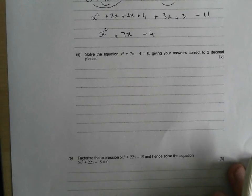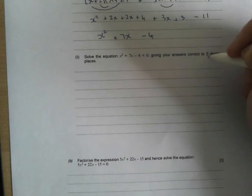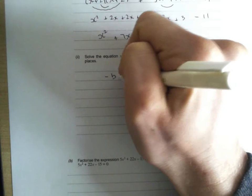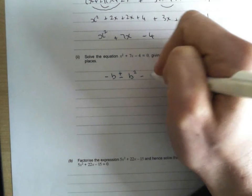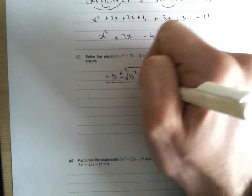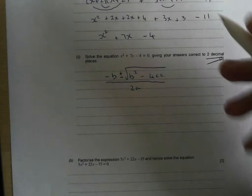Next one. Solve the equation x squared plus 7x minus 4 equals 0, giving your answer to two decimal places. As soon as you see that, that is a golden shining light that says it's got to be a formula job, a quadratic formula. It would not ask you to solve to two decimal places if the quadratic formula was not involved. So write down your quadratic formula that's given at the front of your exam paper.